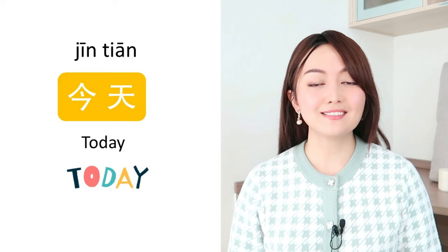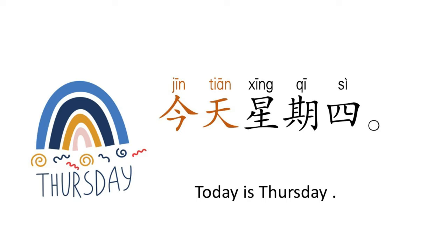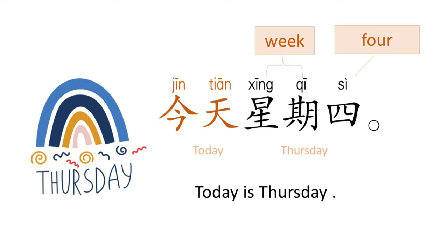今天星期四 means 'Today is Thursday.' 今天 is 'today.' 星期四 is 'Thursday' — 星期 means 'week', and 四 is the fourth day of the week. 星期四. It's very easy to learn the days of the week in Chinese. 今天星期四.